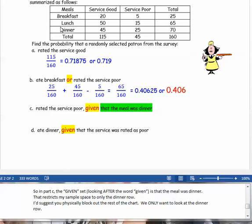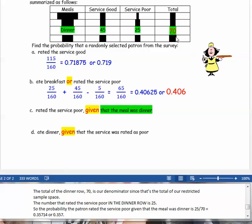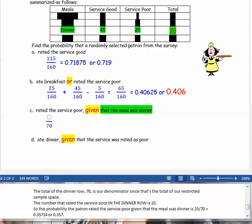That the meal was dinner restricts my sample space to only the dinner row. That's my sample space. I don't want anything else in this chart, so I would suggest you physically block out the rest of the chart. We only want to look at the dinner row. So I've taken out everything else in the chart and just left the part that I want to look at. The total of the dinner row, 70, is our denominator because that's the total of our restricted sample space. The question asked the probability that they rated the service poor, but we're only looking in the dinner row. So in the dinner row, the number that said the service was poor was 25.